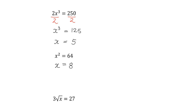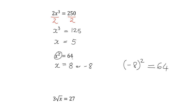We actually have to look at both the positive and the negative square root. Because 8 squared gives us 64, but also negative 8 squared — because a negative times a negative is positive — also gives us 64. So when you're solving something that's x squared, don't forget that you've got to take both the positive and the negative square root.